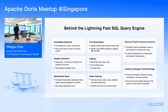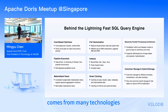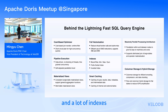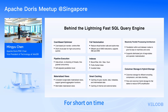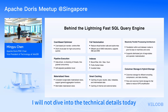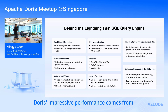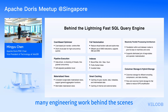Doris' performance comes from many technologies such as a cost-based optimizer, a fully vectorized query engine, an adaptive pipeline execution engine, various indexes, smart caching, and materialized views. For brevity I won't dive into technical details today, but this impressive performance comes from extensive engineering work behind the scenes.